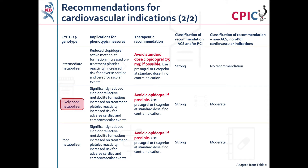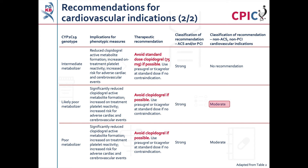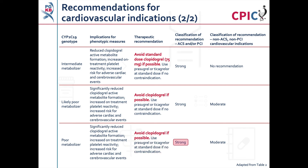Patients who are CYP2C19 likely poor metabolizers have significantly reduced formation of the active metabolite of clopidogrel and increased on-treatment platelet reactivity, putting them at increased risk for adverse cardiac and cerebral vascular events. Clopidogrel should be avoided; this is a strong recommendation for ACS or PCI and a moderate recommendation for non-ACS, non-PCI cardiovascular indications. Patients who are CYP2C19 poor metabolizers similarly have significantly reduced active metabolite formation; clopidogrel should be avoided with a strong recommendation for ACS or PCI and a moderate recommendation for non-ACS, non-PCI indications.